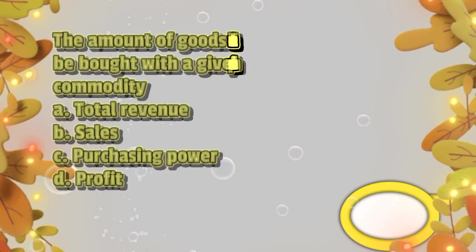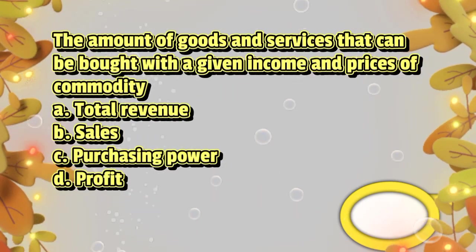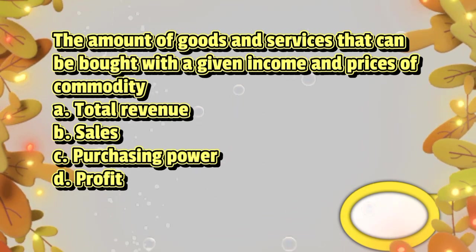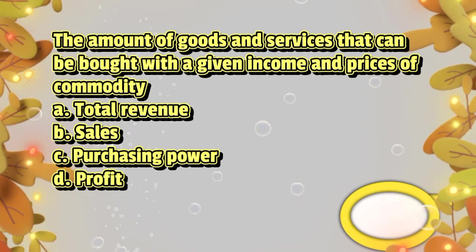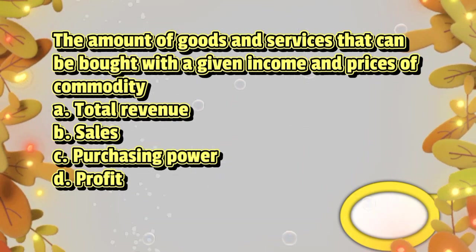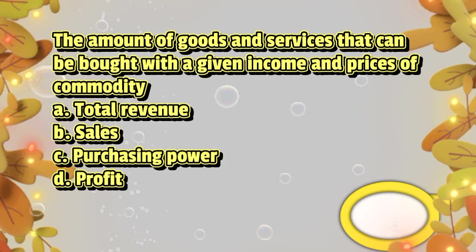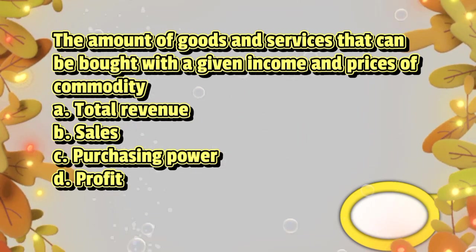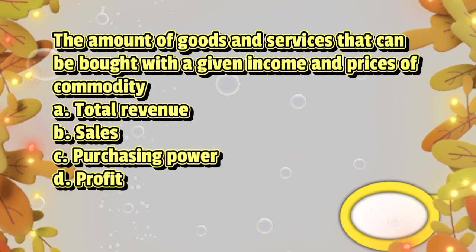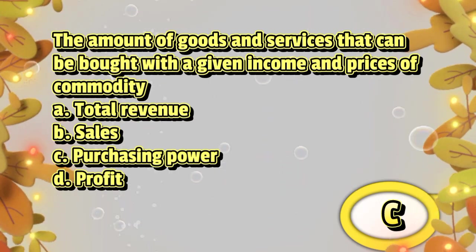The amount of goods and services that can be bought with a given income and prices of commodity. A. Total revenue. B. Sales. C. Purchasing power. D. Profit. The answer is letter C.